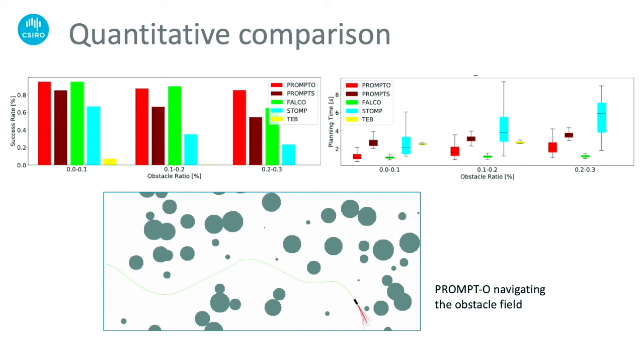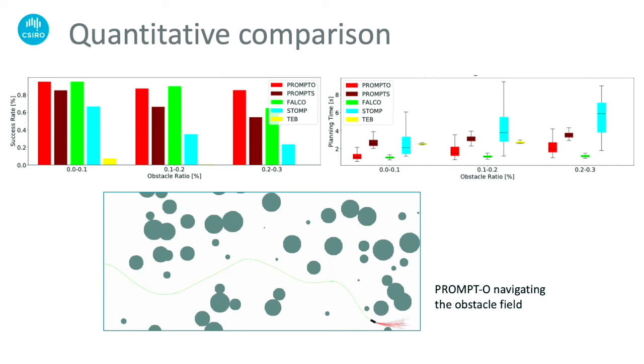However, as the obstacle density increases, PROMPTO outperforms such planners. This shows that PROMPTO is a robust planner both in terms of success rates and close to real-time performance.